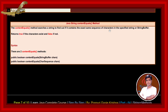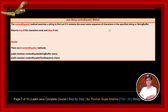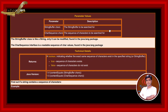Java string contentEquals method. The contentEquals method searches a string to find out if it contains the exact same sequence of characters in a specified string or string buffer. It returns true if the characters exist and false if not. There are two contentEquals methods: public boolean contentEquals(StringBuffer) and public boolean contentEquals(CharSequence). The parameters are StringBuffer characters — the string buffer to be searched for — and CharSequence characters — the sequence of characters to be searched for.